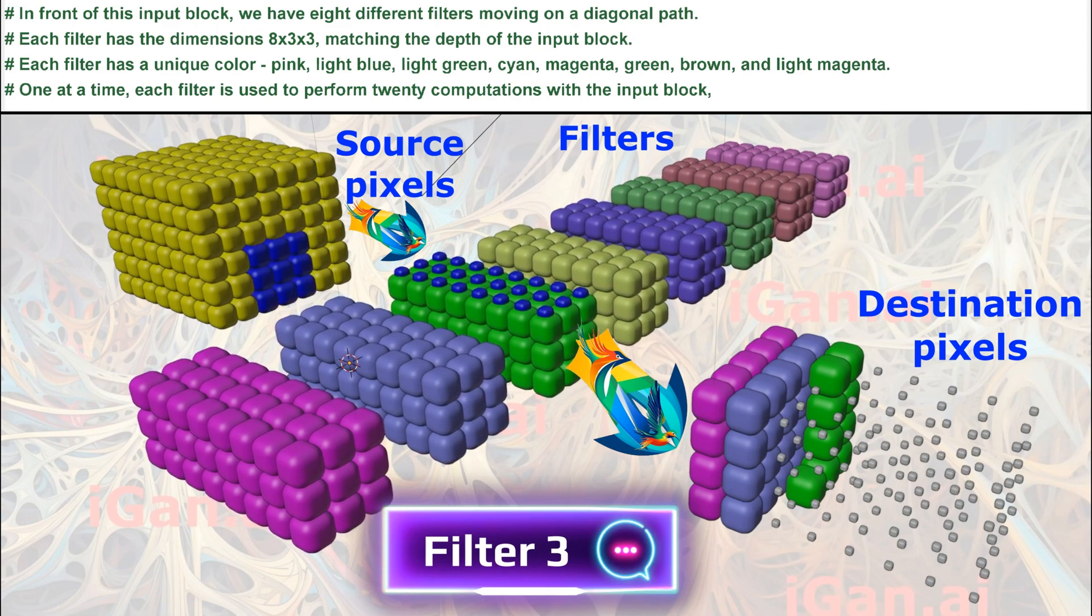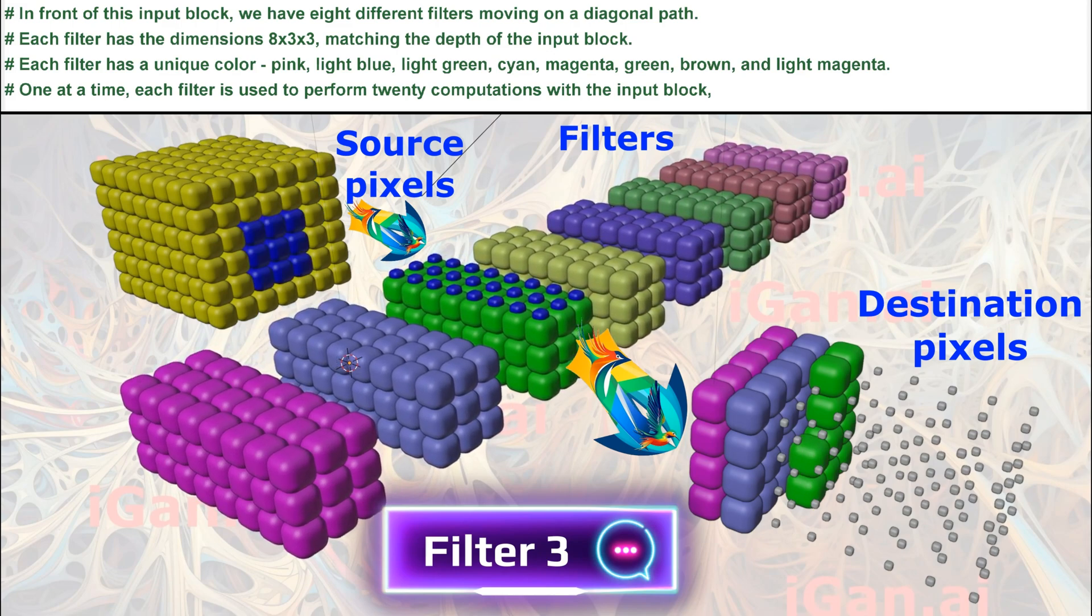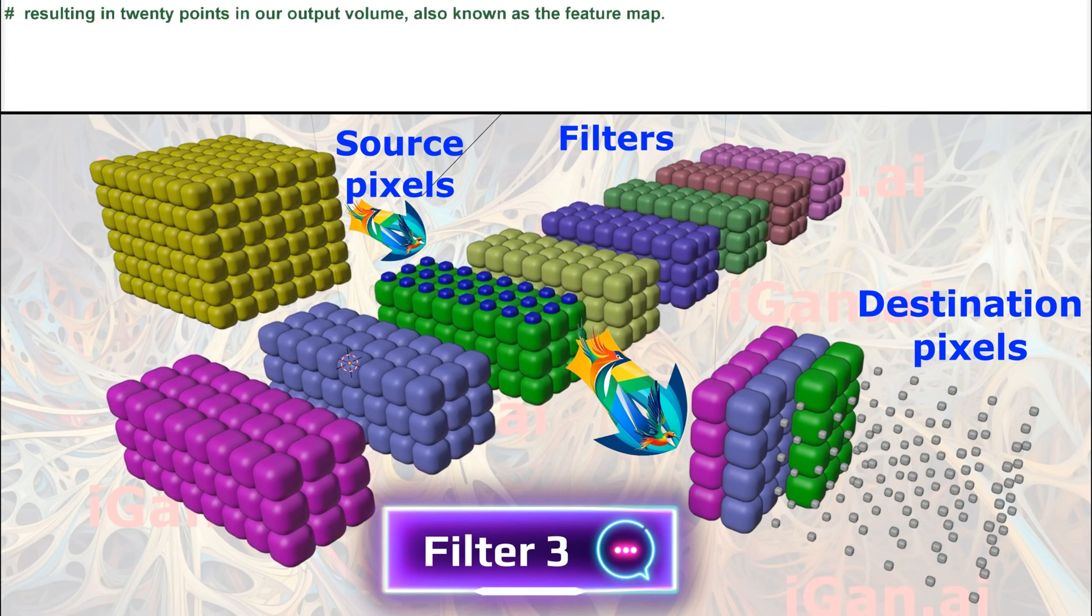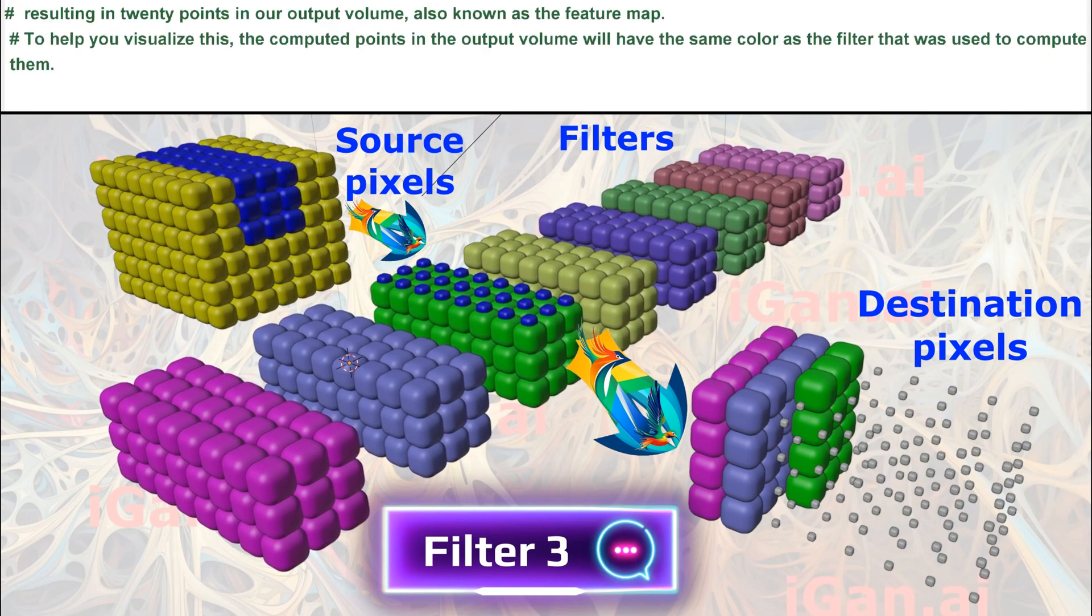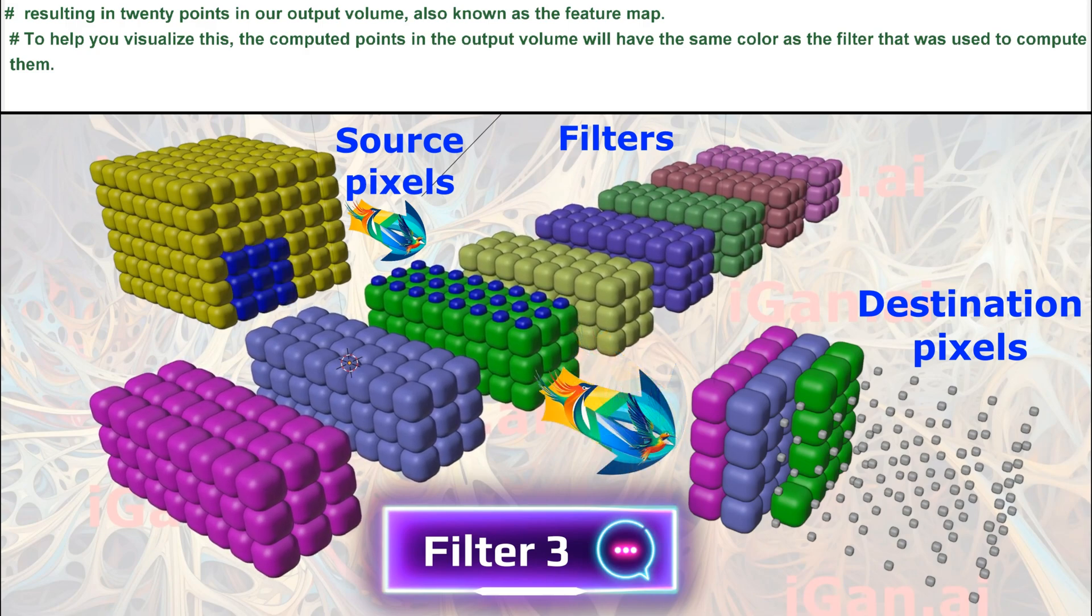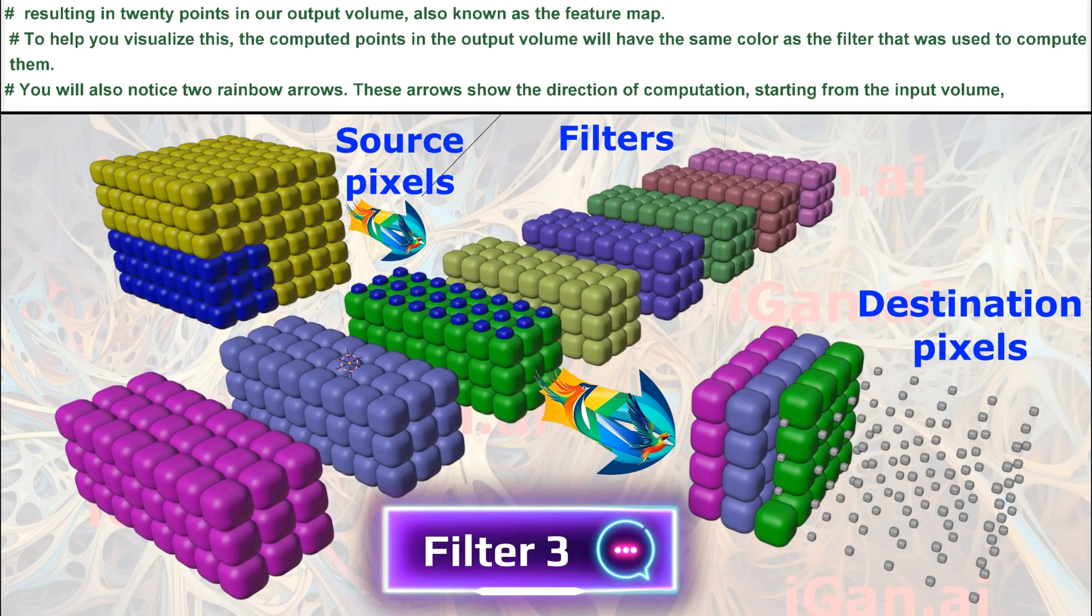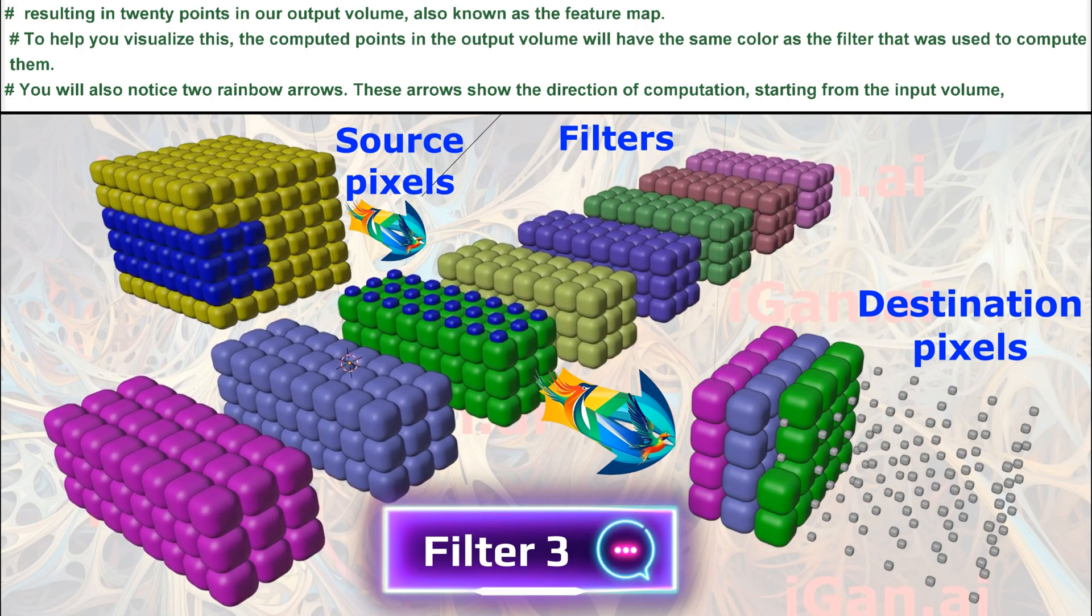One at a time, each filter is used to perform 20 computations with the input block, resulting in 20 points in our output volume, also known as the feature map. To help you visualize this, the computed points in the output volume will have the same color as the filter that was used to compute them.